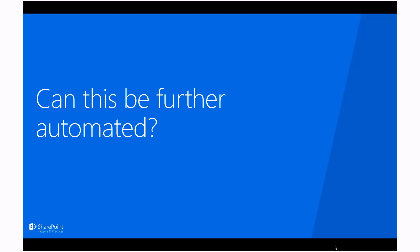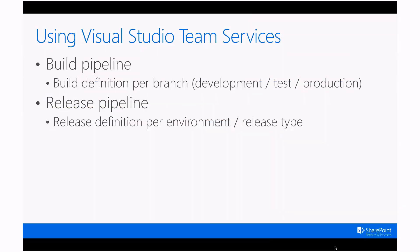For full automation we're going to use VSTS — Visual Studio Team Services. Since we all probably have multiple environments for development, testing, and production, we can automate so that every time we push a new release to our dev branch, a new build process starts for that branch and triggers a release to the dev tenant. The same can be done for testing and production. You create a build pipeline definition per branch — development, test, and production — and similarly for your release definitions.